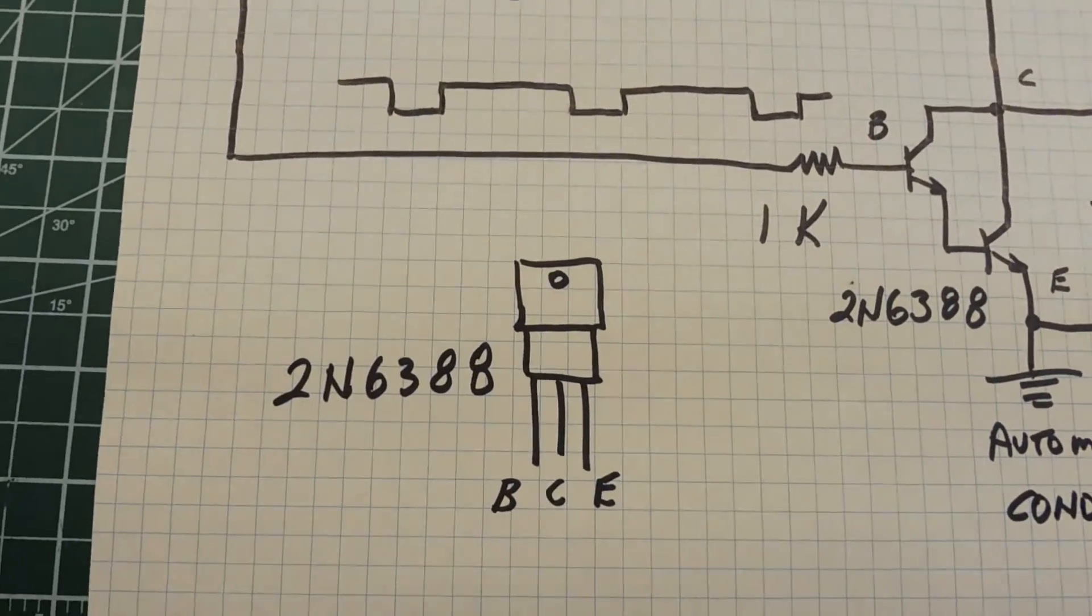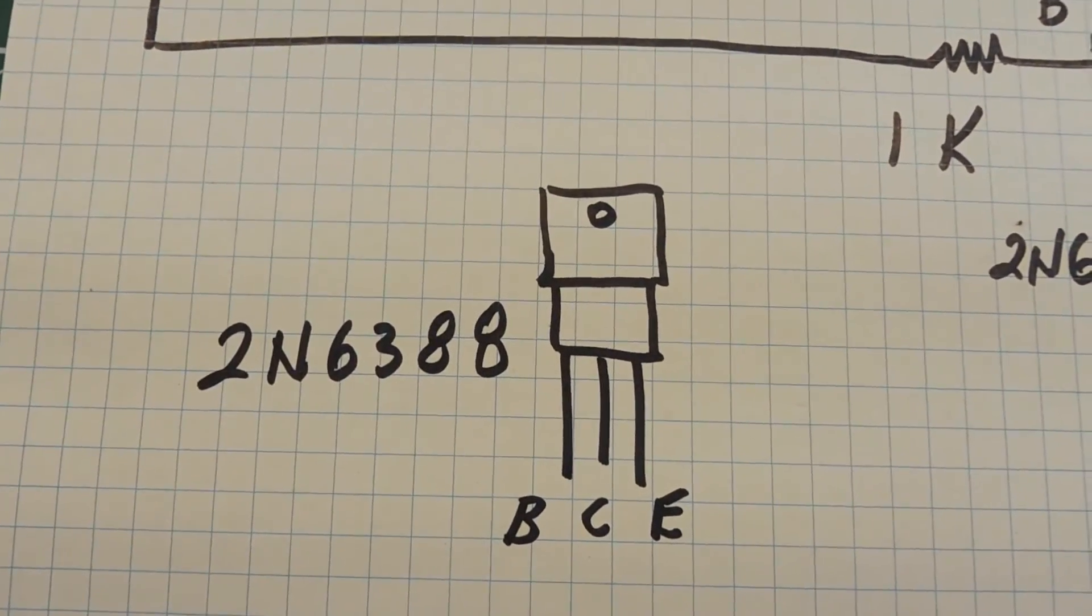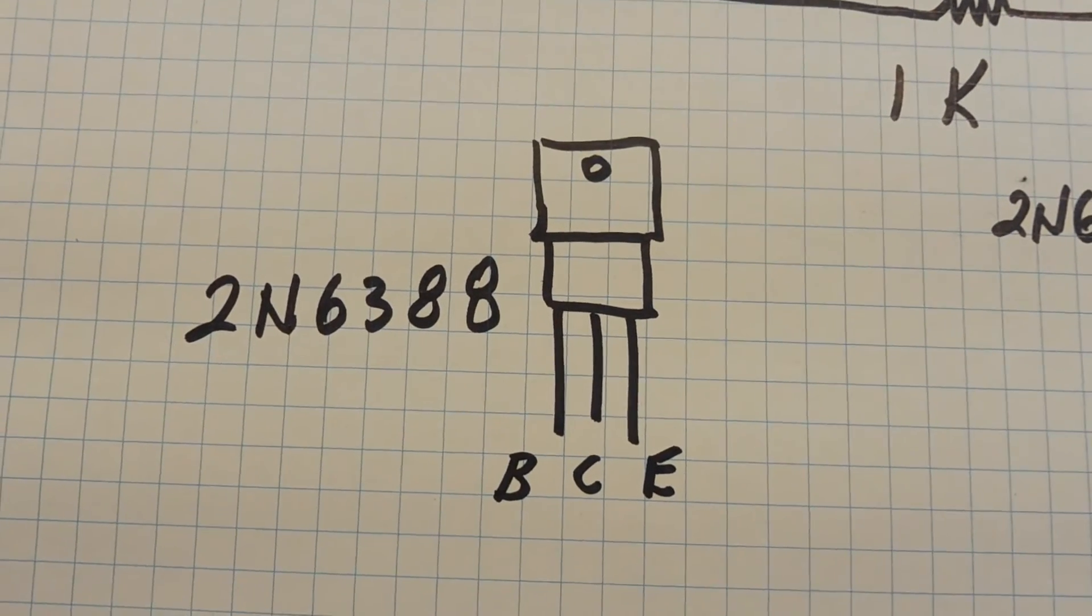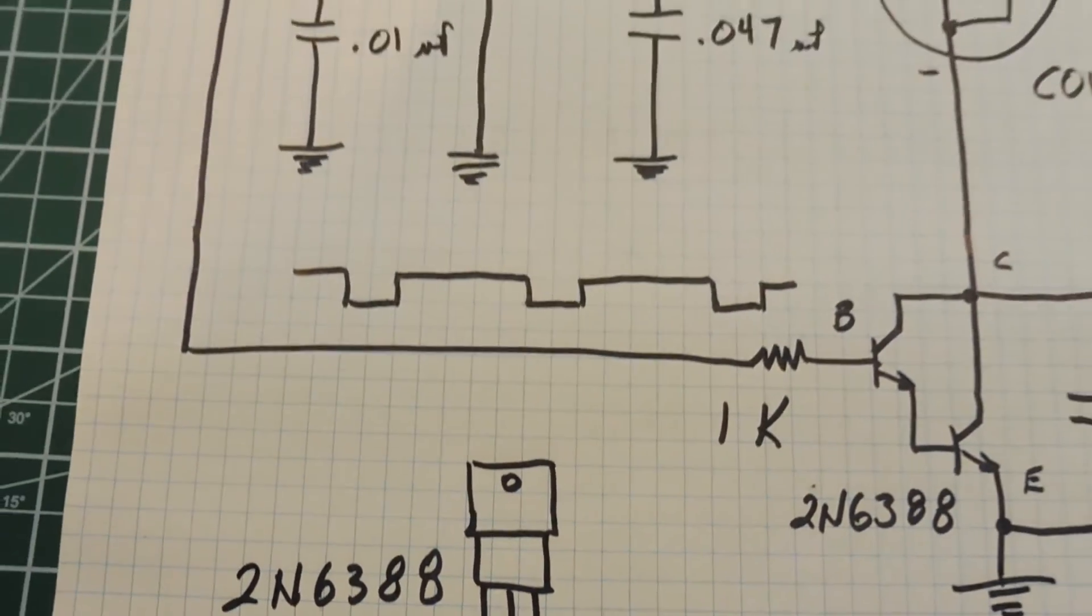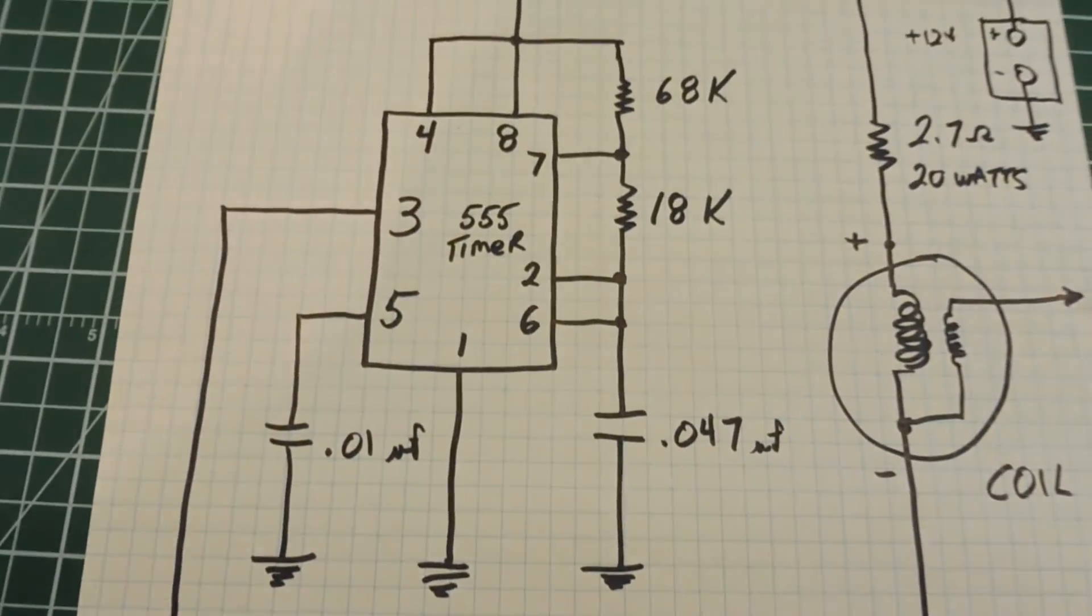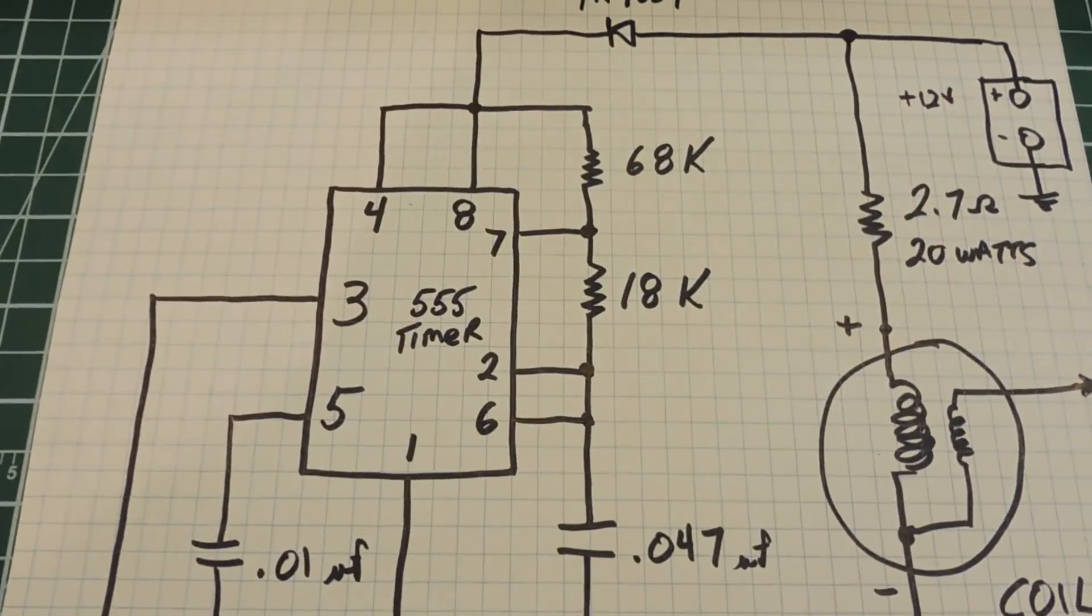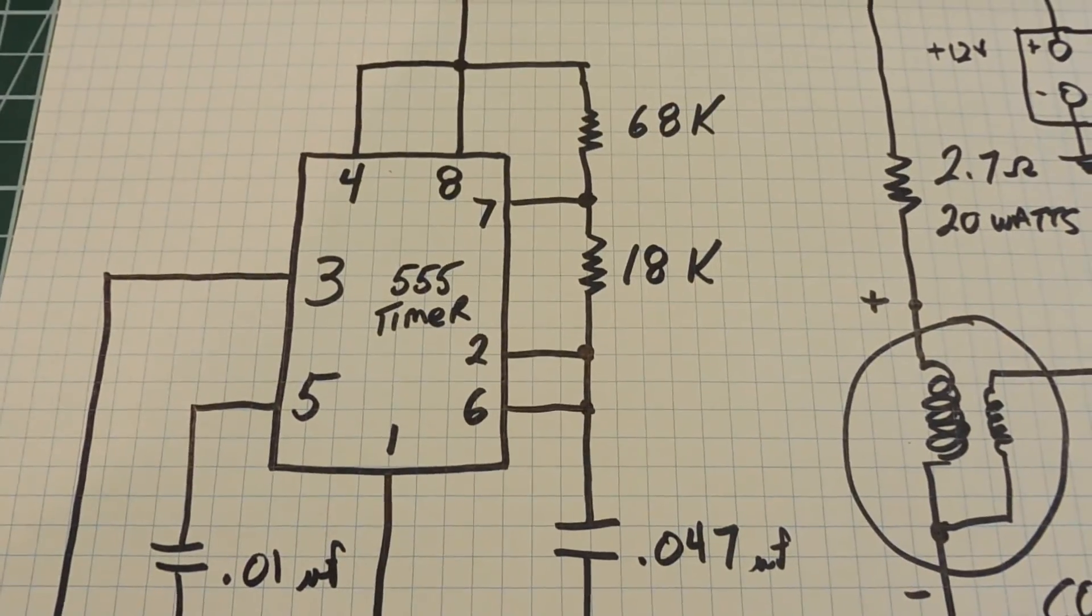So basically that's the circuit. The transistor, 2N6388 is a Darlington transistor and you need a heat sink on there because it's going to get warm. And if you want to run a 4 cylinder vehicle on this, you have to change the resistor and capacitor values.